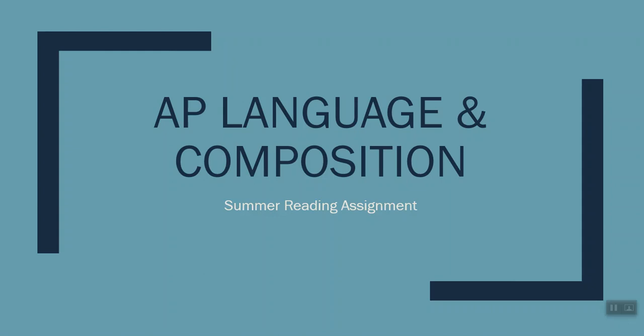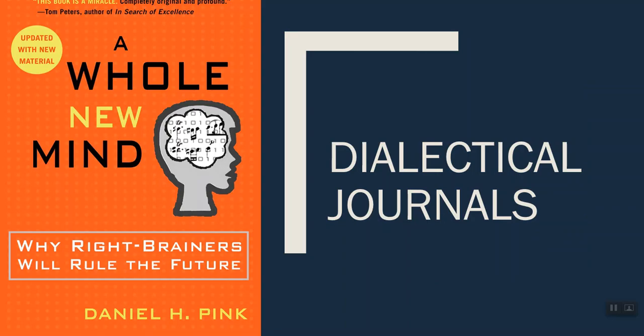Hello, and welcome to AP Language and Composition, your summer reading assignment and the first step in what's going to be a really fun and exciting journey as we start to get ready for the 2020-2021 school year. For your summer reading assignment, you have been assigned to read the book A Whole New Mind by Daniel H. Pink, where the focus of this nonfiction literary novel is on right brain thinking and the future. There will be a test over it, and so this summer reading assignment is actually going to help you prepare for that test.